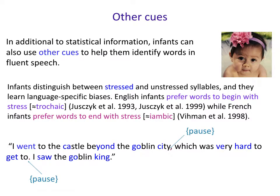Another cue that infants can use to help them identify words in fluent speech involves stressed and unstressed syllables. Infants can distinguish between stressed syllables, which are the ones that have the emphasis, and unstressed syllables, which are the ones that don't.